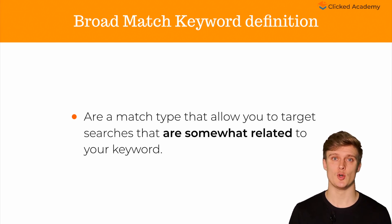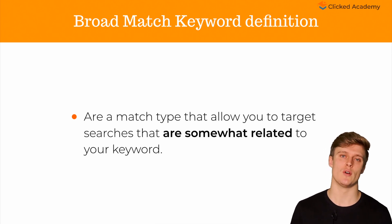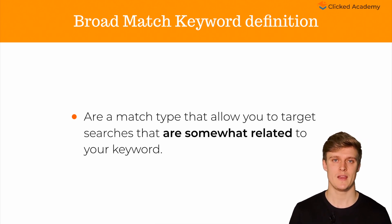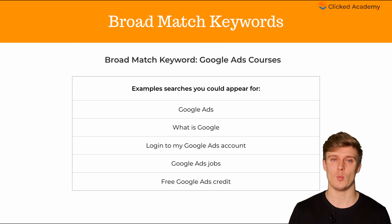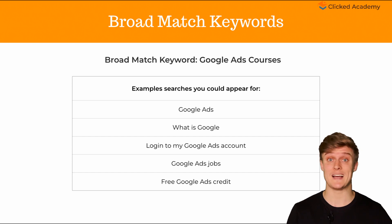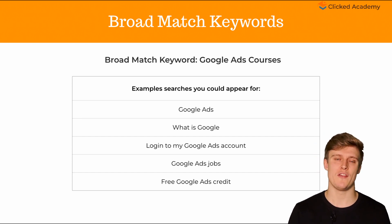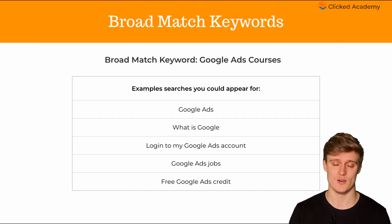The third type of keyword is called broad match. Broad match keywords target searches that are somewhat related to your keyword. If your keyword was 'Google Ads courses', then you might show up in searches such as 'Google Ads' or 'what is Google'. Now these users are most likely looking to log into their own Google Ads account or do a whole range of other activities that aren't related to looking for a Google Ads course.